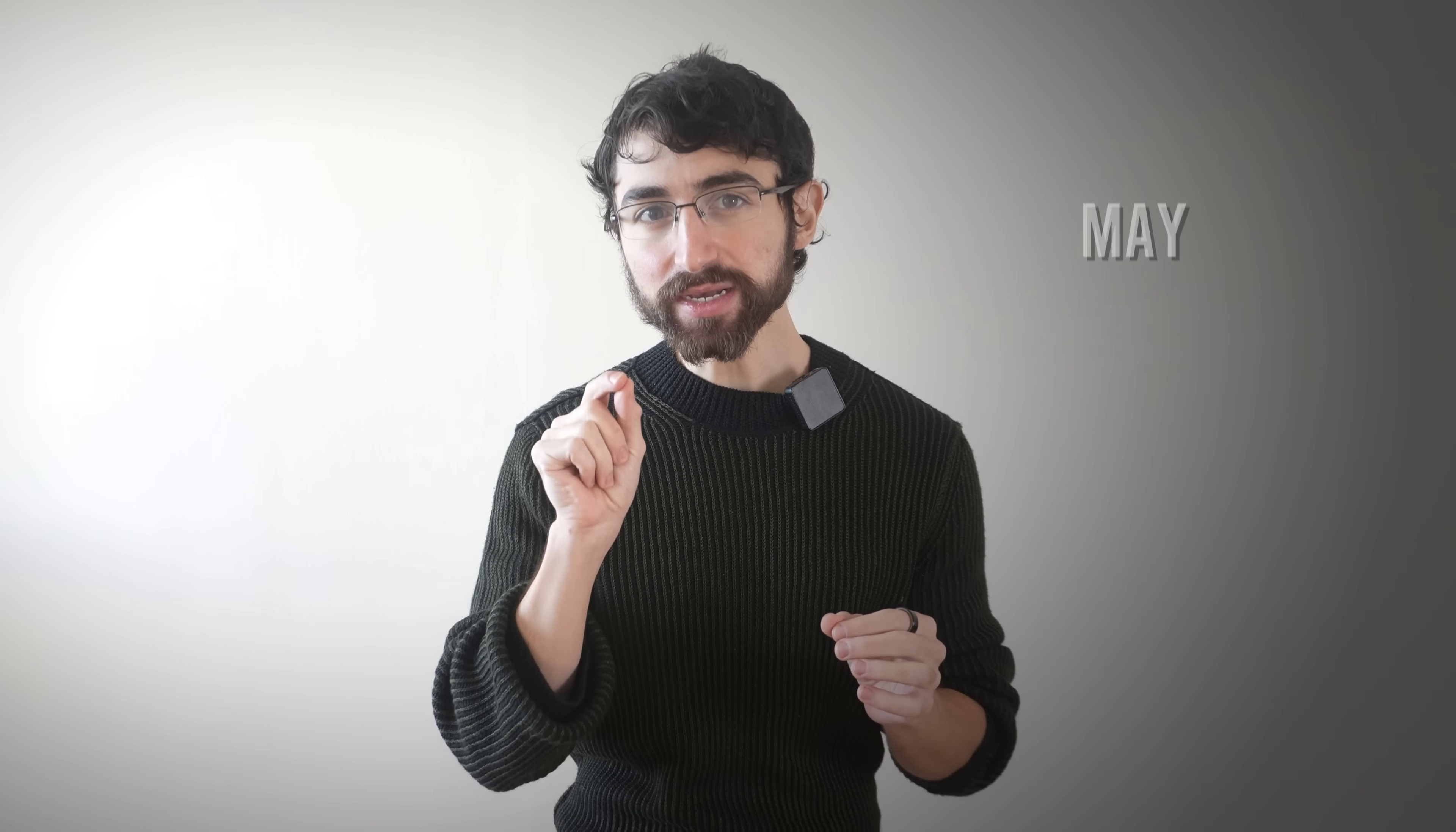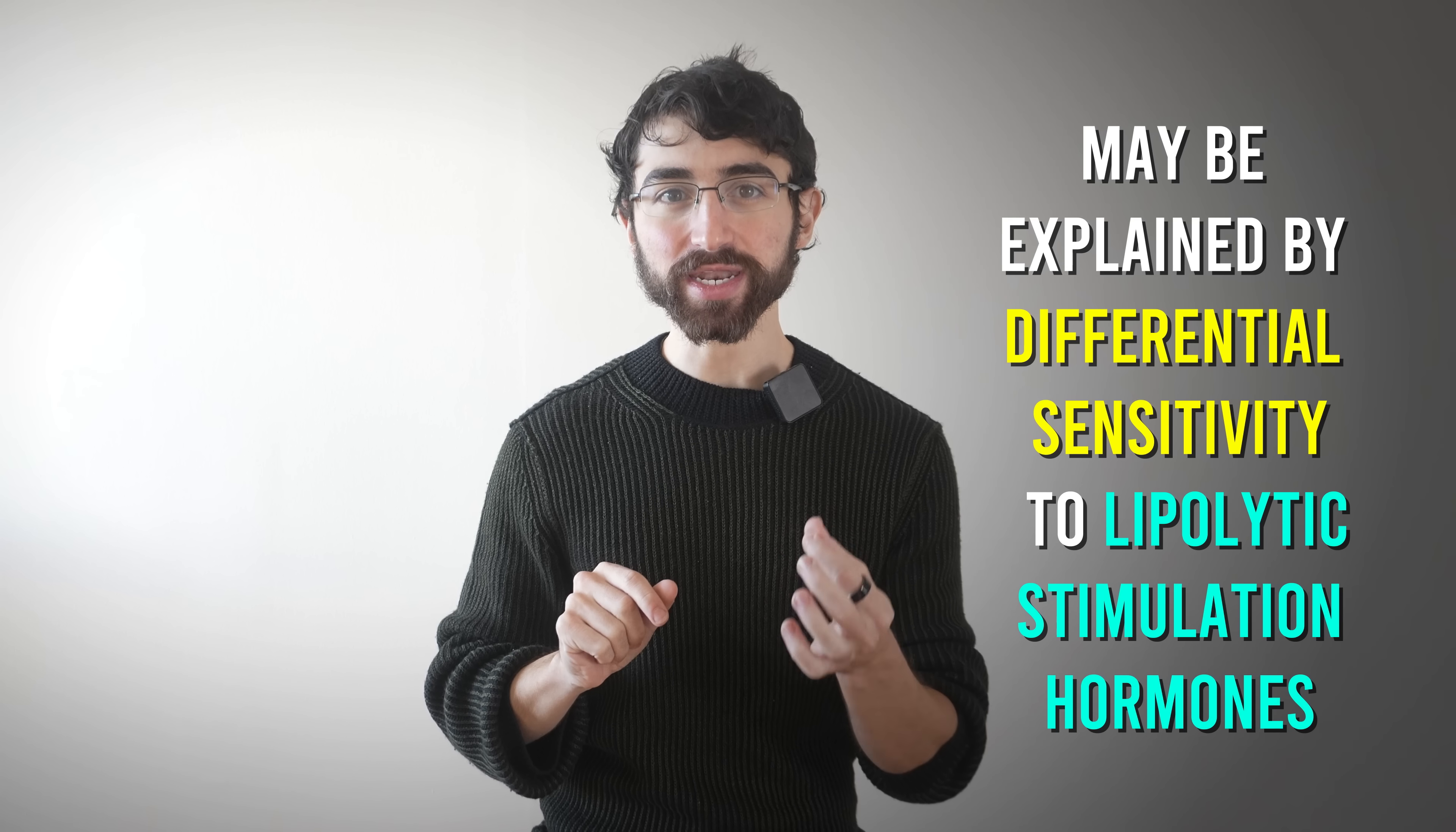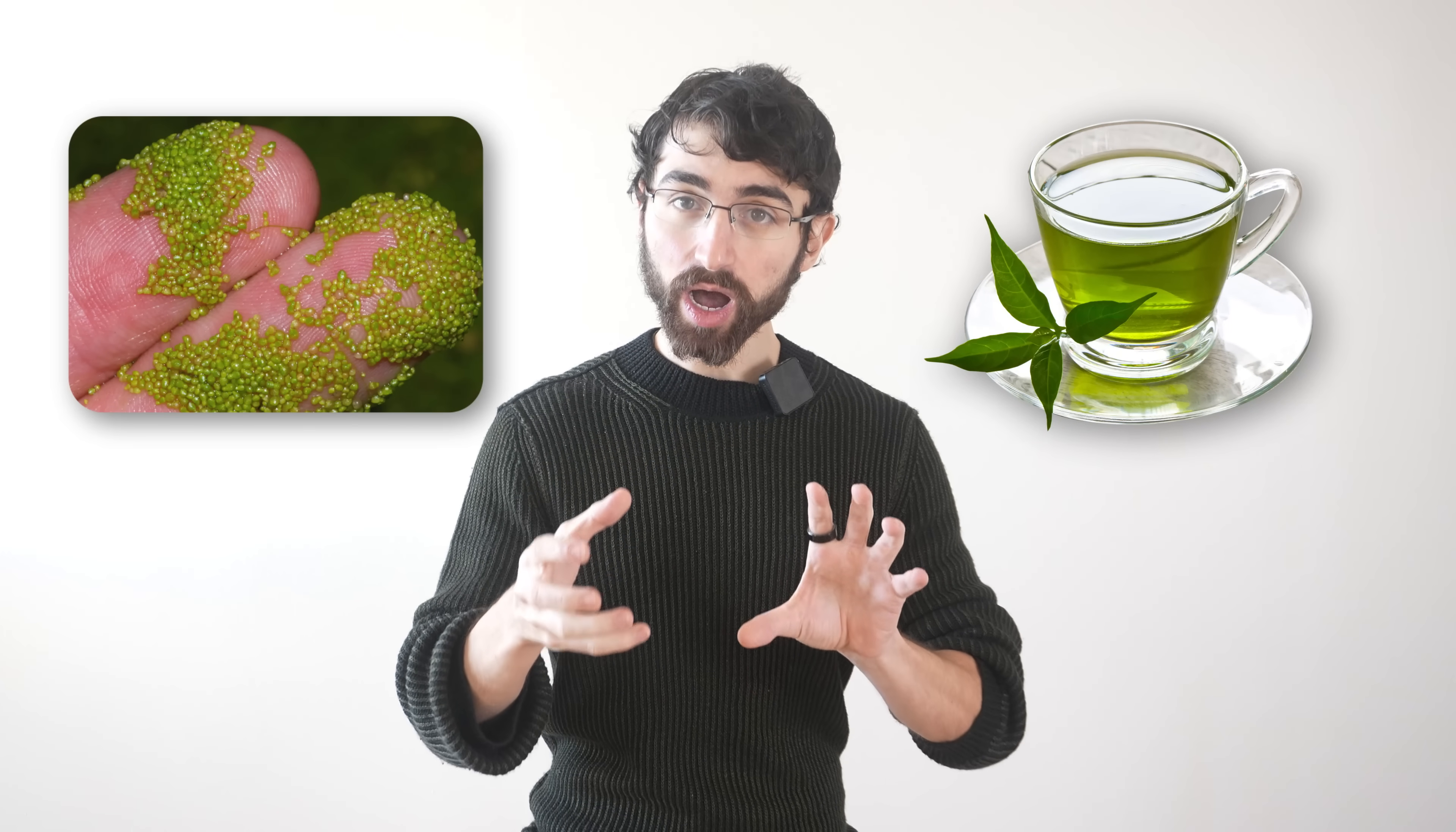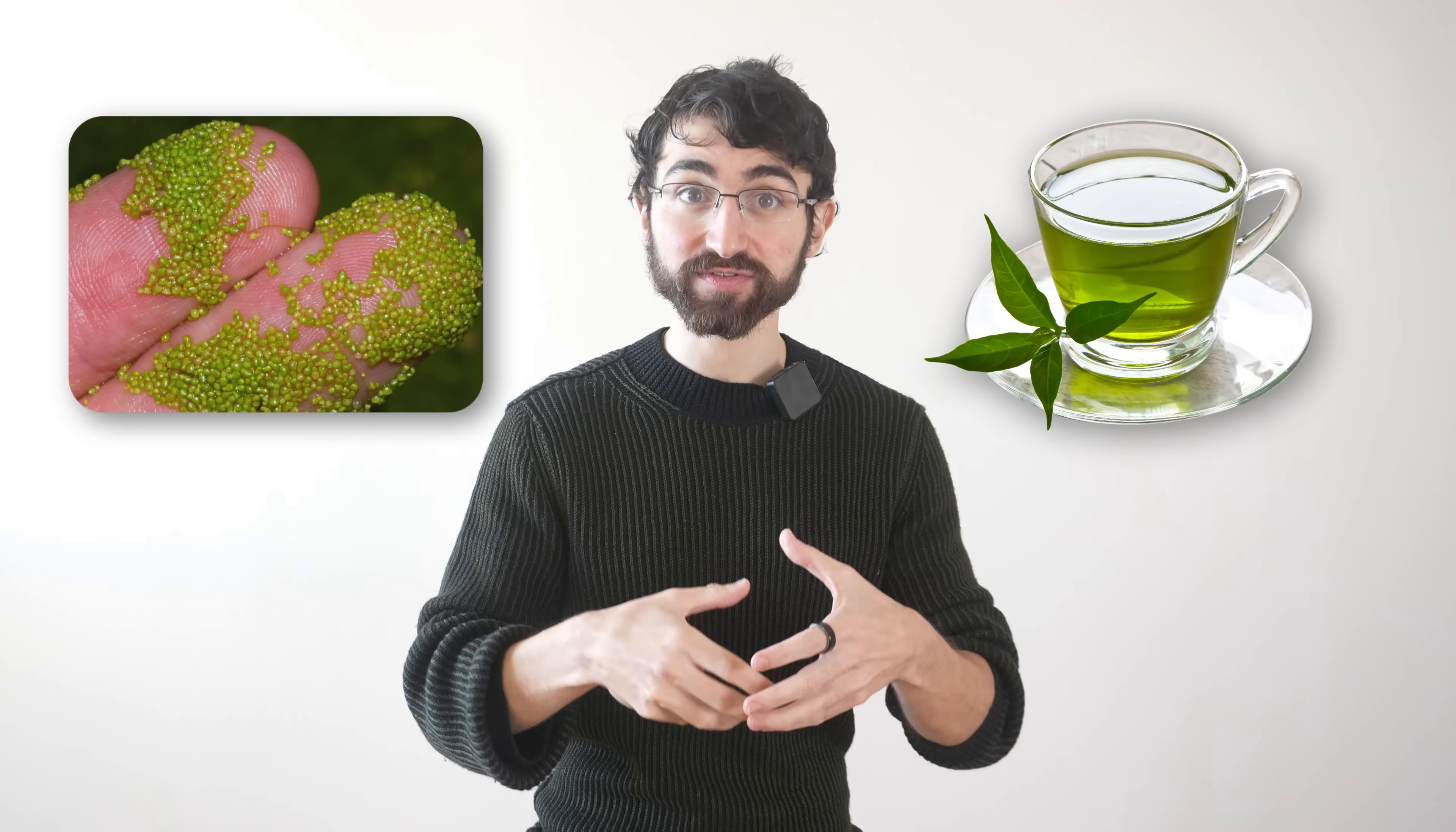In the author's words, the way they explain it, the difference in preferential visceral fat loss may be explained by differential sensitivity to lipolytic stimulation hormones, which can be influenced by specific components of the green med diet, including compounds found in green tea or duckweed. Basically, they're saying compounds found in these foodstuffs may make visceral fat more sensitive to being lost.